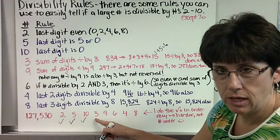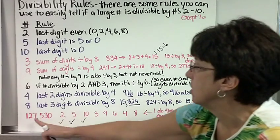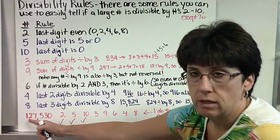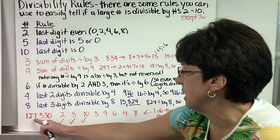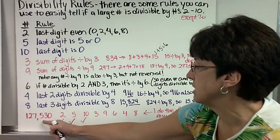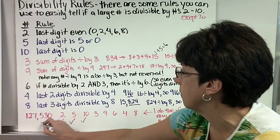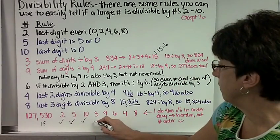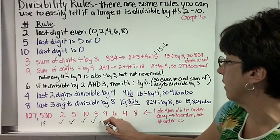Is it divisible by 3? Well, we have to add up the digits. 1 plus 2 is 3. 3 and 7 is 10. 5 plus 3 is 8. 10 plus 8 is 18. I'm just going to write that down. Does 3 go into 18? Yep, and so does 9.